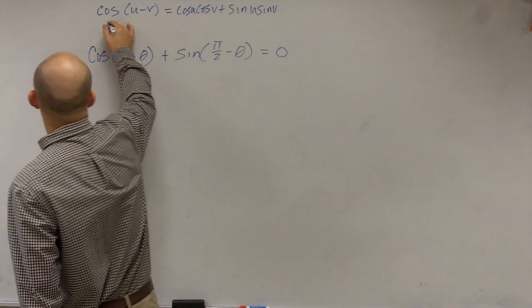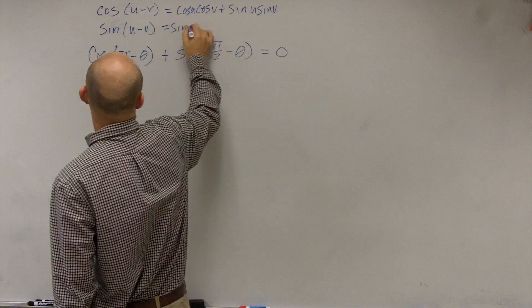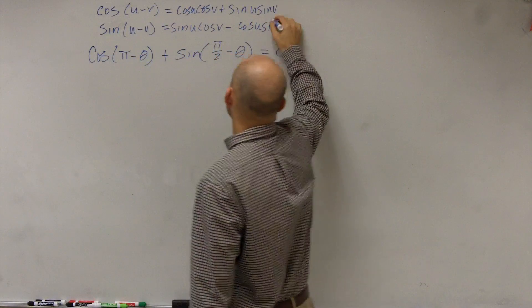That's that one formula that you're given. And also, we have the sine of u minus v. That's equal to the sine of u times cosine of v minus the cosine of u times the sine of v.